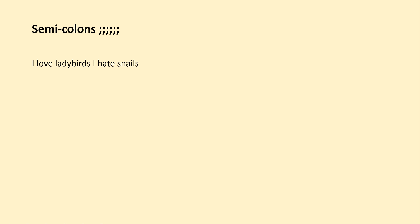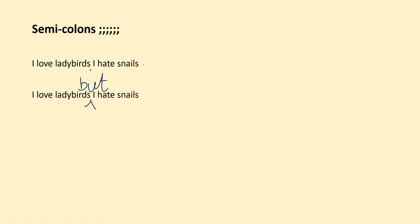So if you have a look at this sentence here: 'I love ladybirds, I hate snails.' Hopefully you've recognised that isn't correct — you do need some punctuation in there. So what you could do is separate this into two sentences: 'I love ladybirds. I hate snails.' Or you could put something in there like 'but', because you've got two sentences that have a contrast between them.